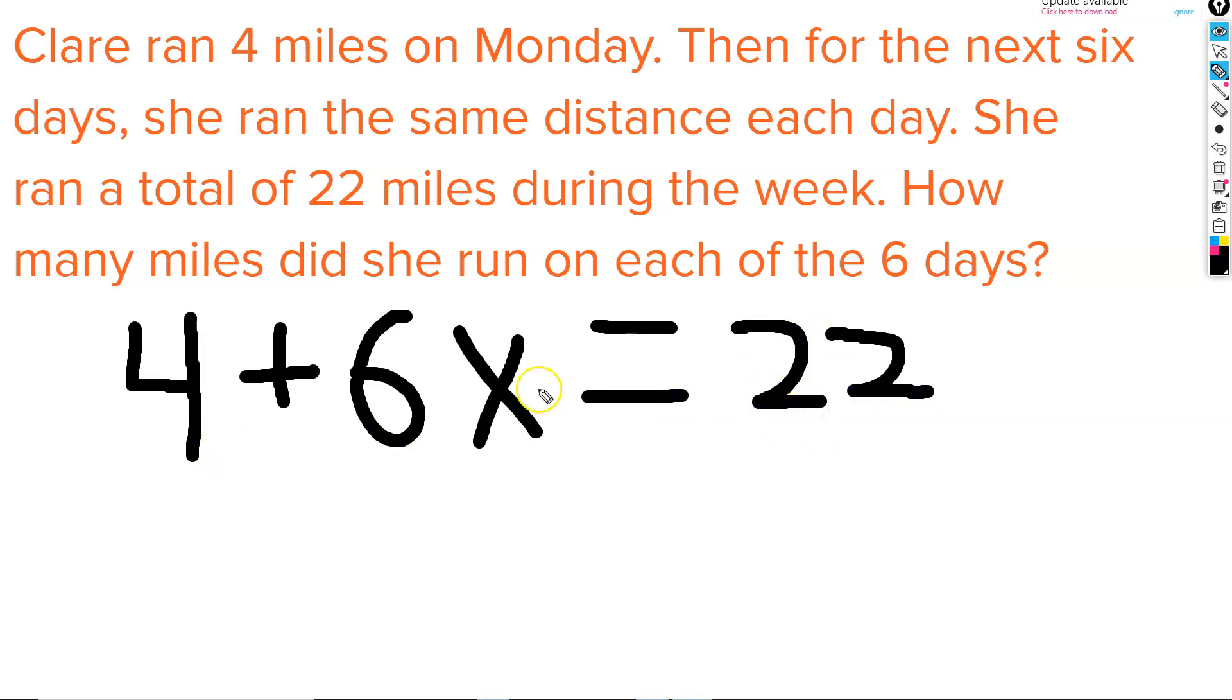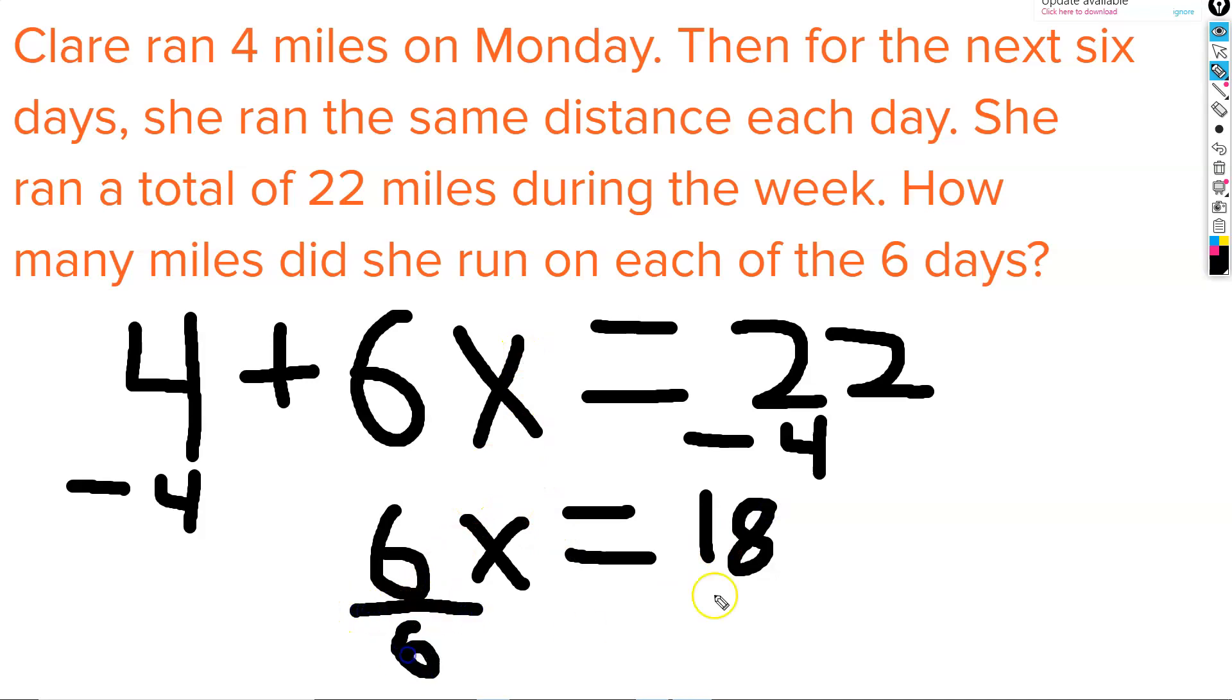If we solve this equation, we'll know how many miles she ran on each of the 6 days. To solve this equation, we'll start by subtracting 4 from each side, and then we'll divide by 6. Because 18 divided by 6 equals 3, x is going to equal 3.